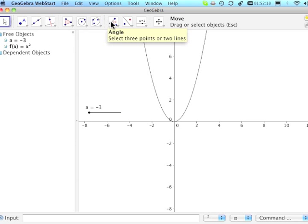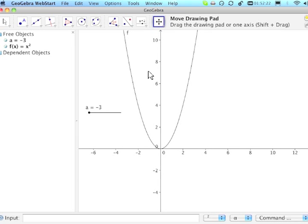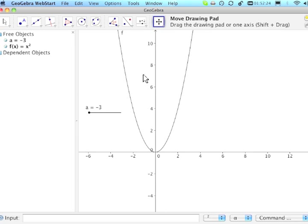I'm going to select move the drawing pad tool, and I'm going to bring the drawing pad down because I know the maximum y value when a is positive 3 in the function will give me an output y value of 9 and the minimum would give me 0. So I need to have that part visible on my graph.